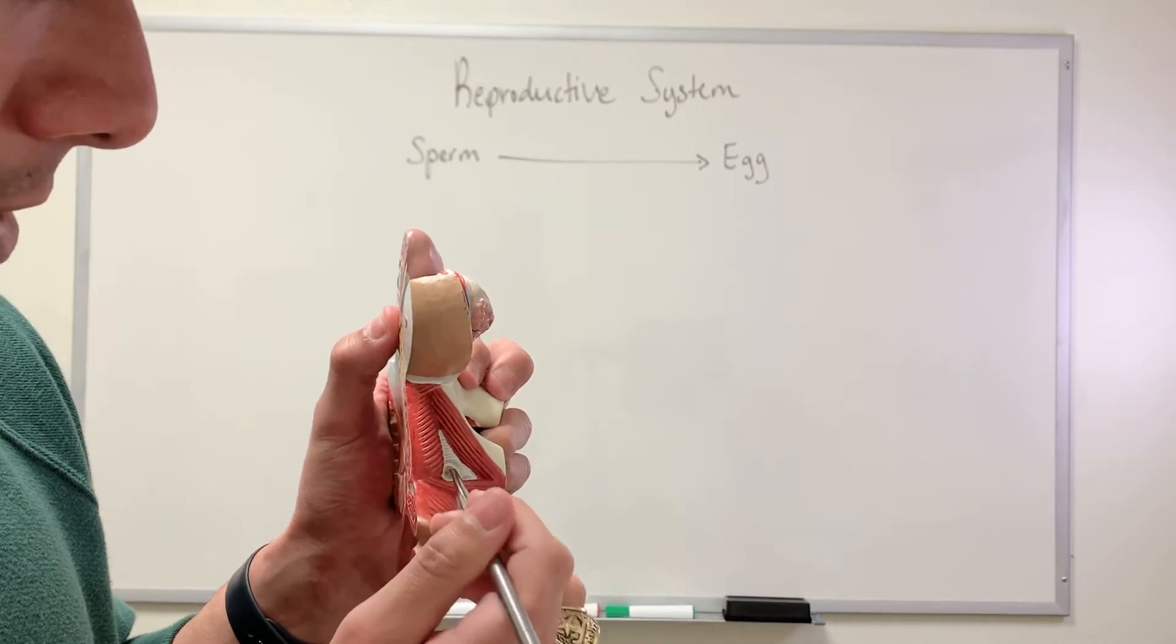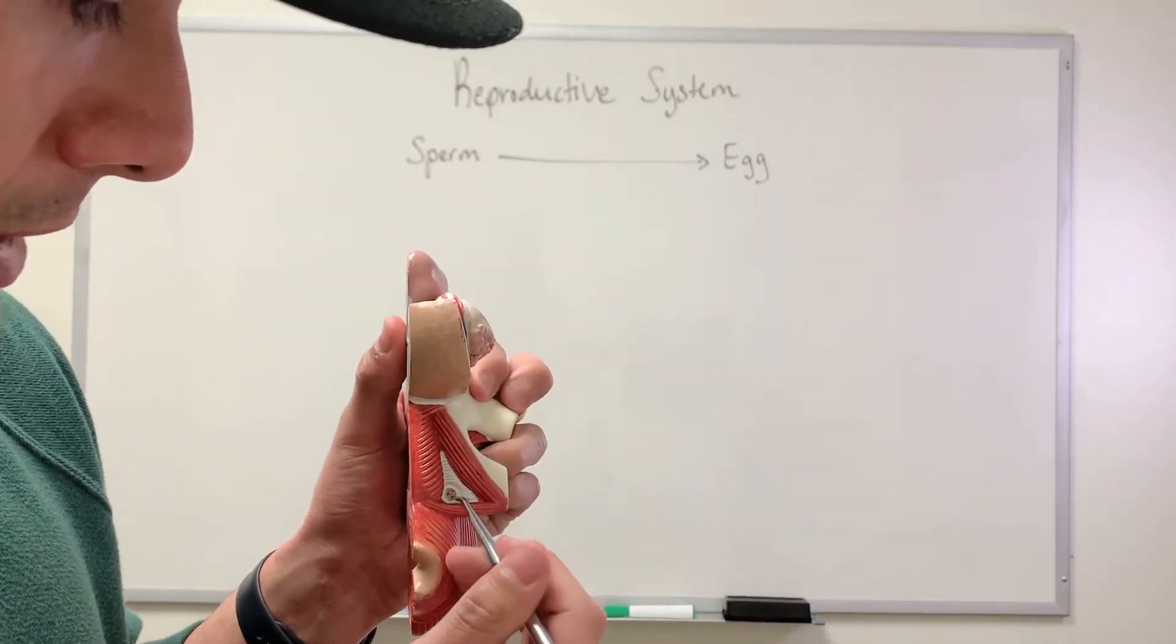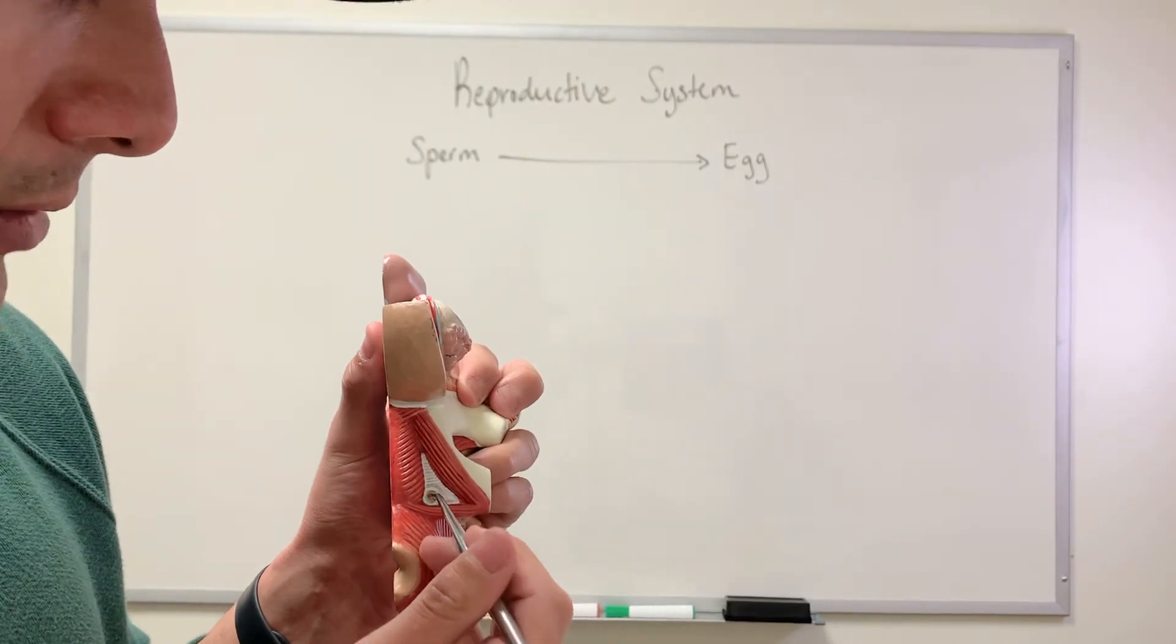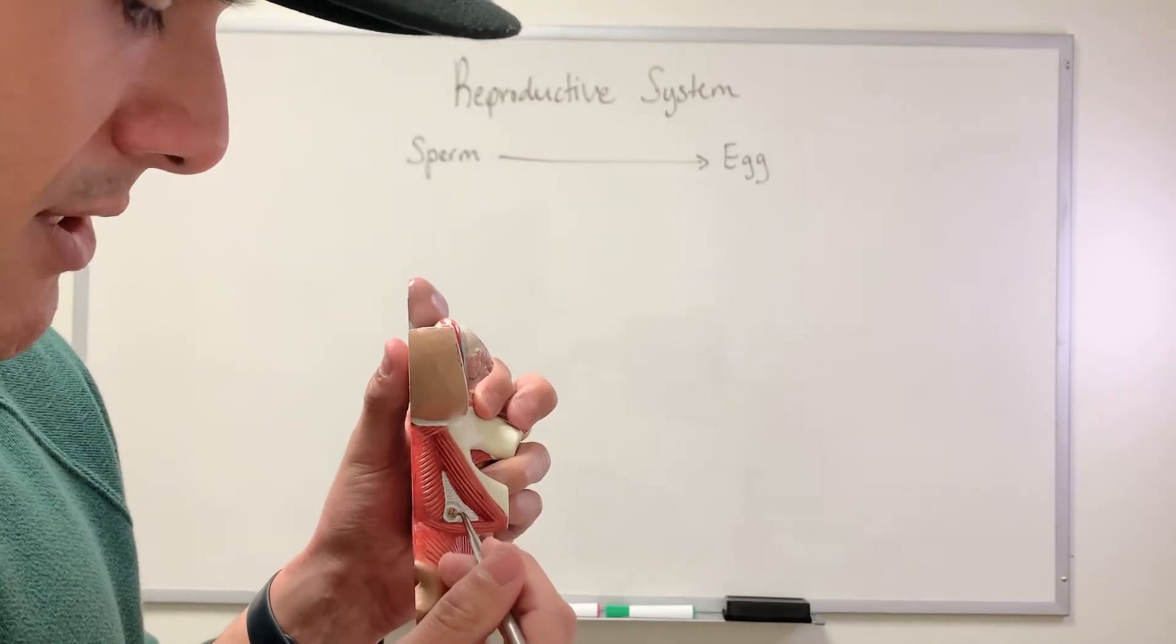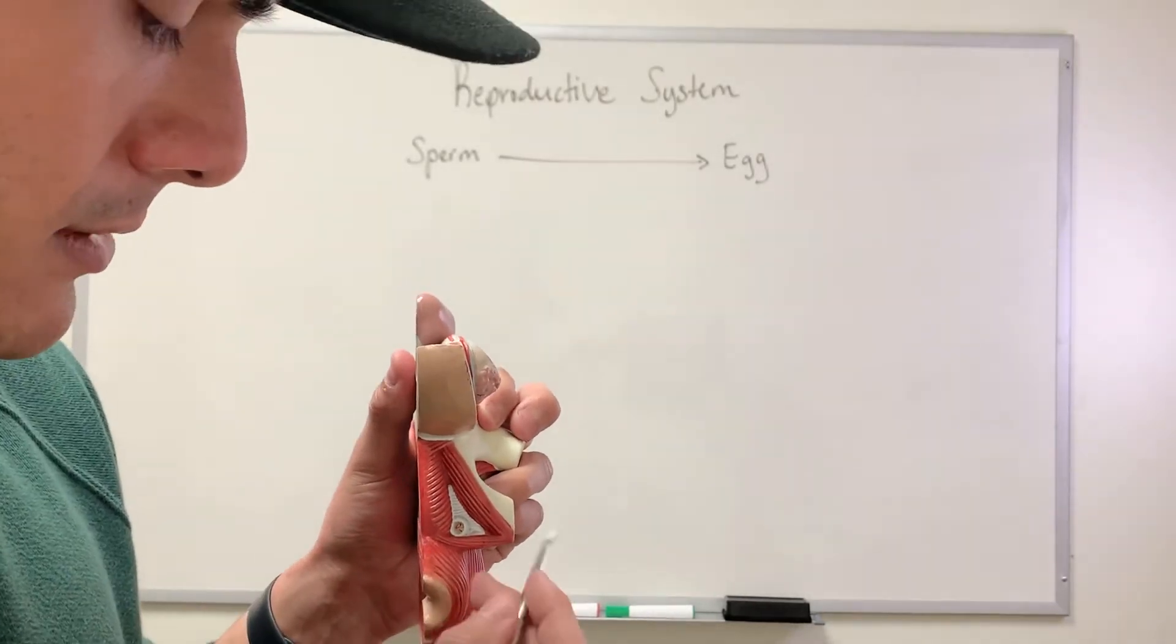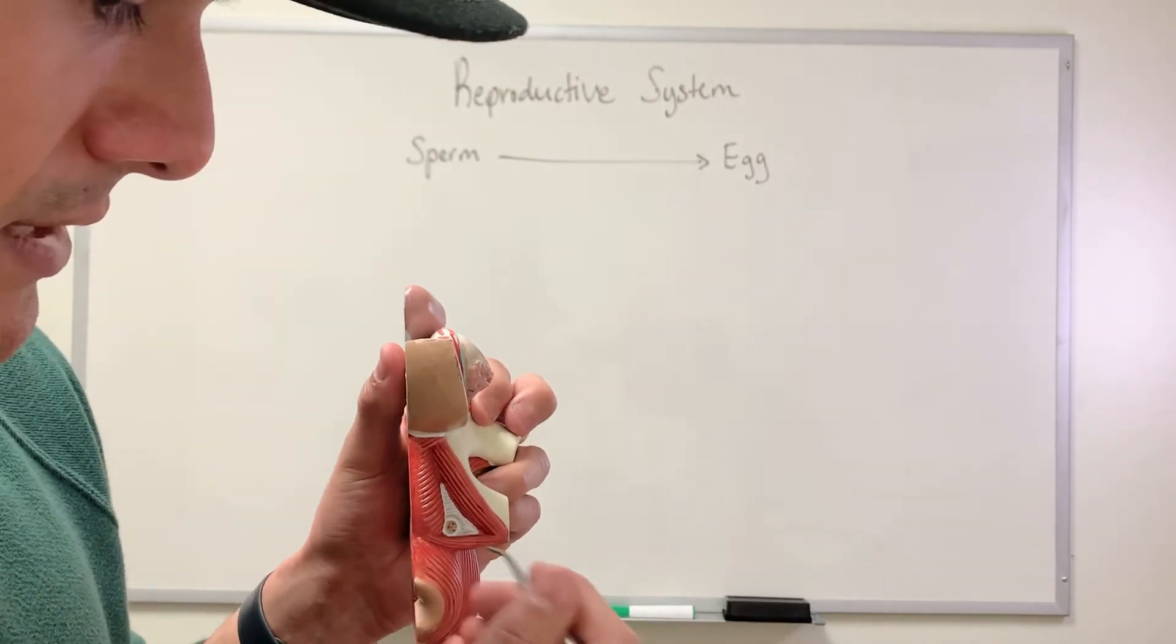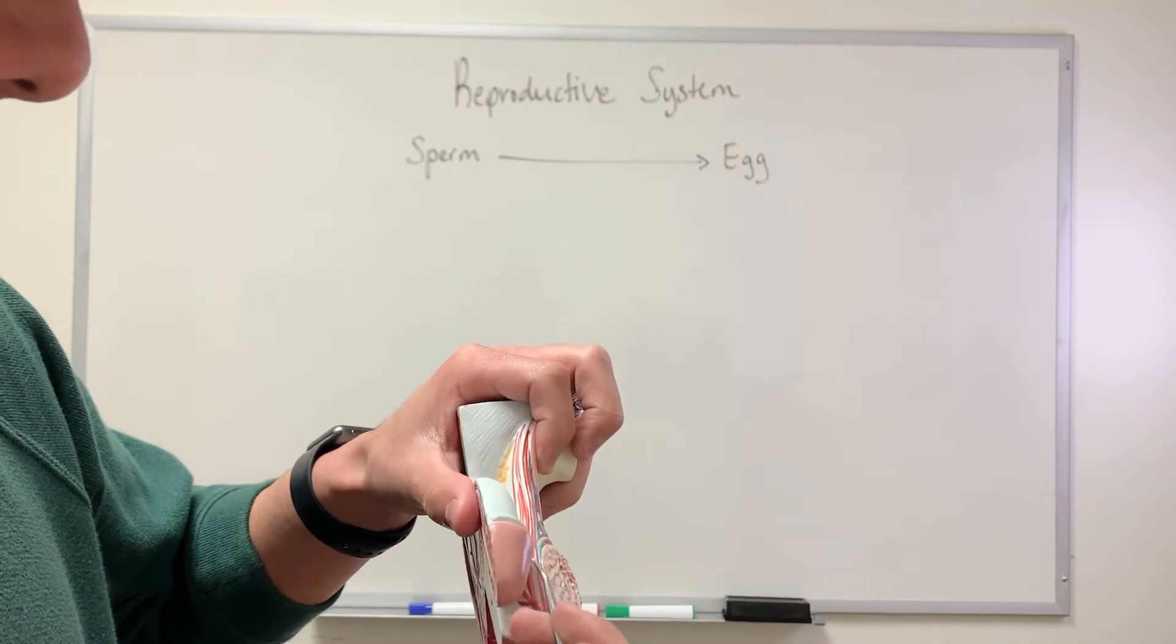So this part right here, and then it's getting into the urethra. So this is the bulbourethral gland, and this secretes about only about 5% of the fluid. So there's not as much in it. The fluid that is secreted is a clear, viscous, thick substance that helps to lubricate the glans penis.